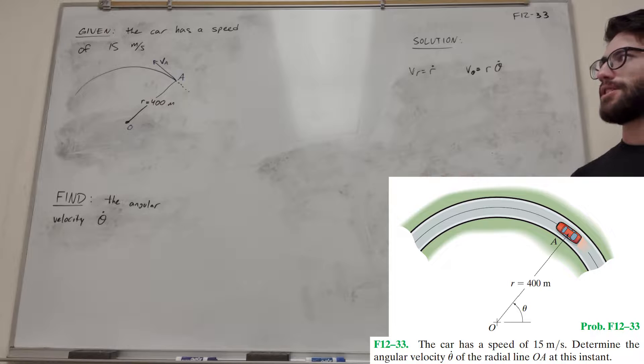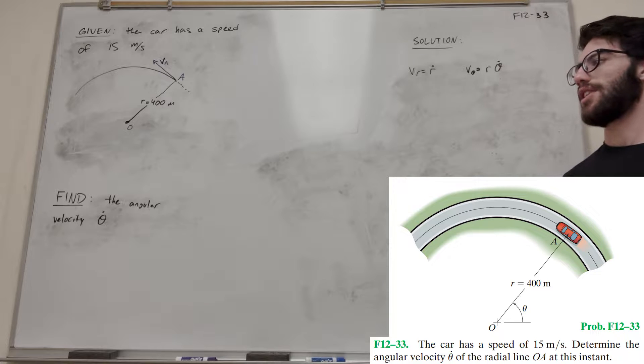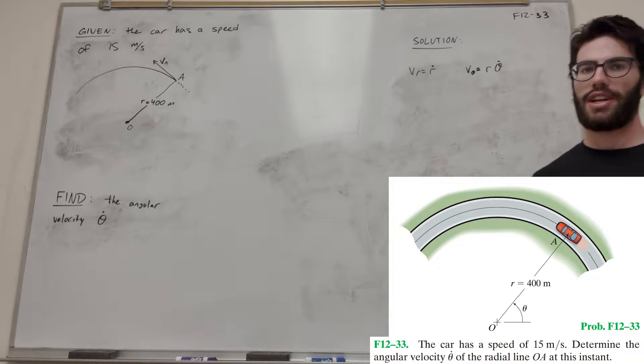We're given a car that has a speed of 15 meters per second, and it's traveling in circular motion, and its radius is 400 meters. Our goal is to find the angular velocity theta dot. So let's go ahead and get started.